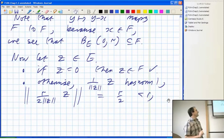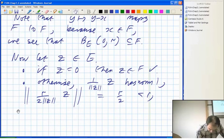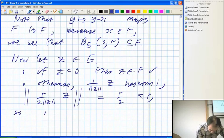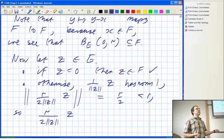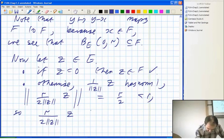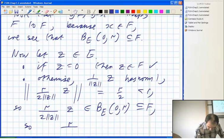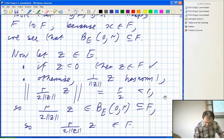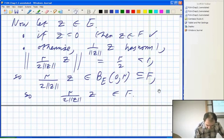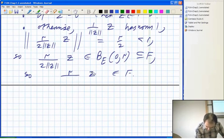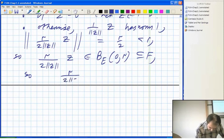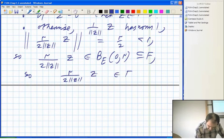So that element is in your little ball centered on the origin radius R. What did I do? I scaled it down, probably scaling by a very small constant to pull it down into the open ball radius R in E. But that is a subset of F. So R over 2 norm Z times Z is in F.